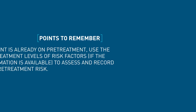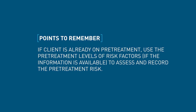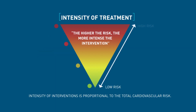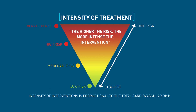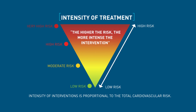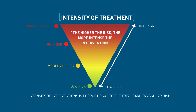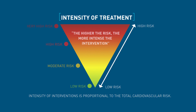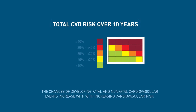If the client is already on treatment, use the pre-treatment levels of risk factors if available to assess and record the pre-treatment risk, then also assess the current risk using current levels. If the individual has high cardiovascular risk, the guidelines recommend more intensive treatment, often including drugs, to lower the risk urgently and prevent a heart attack or stroke. Conversely, if the CVD risk is low, interventions may be more conservative, like counseling for smoking cessation or increased physical activity. Using the charts, a health worker in primary health care can identify people at high risk and refer them for appropriate treatment.